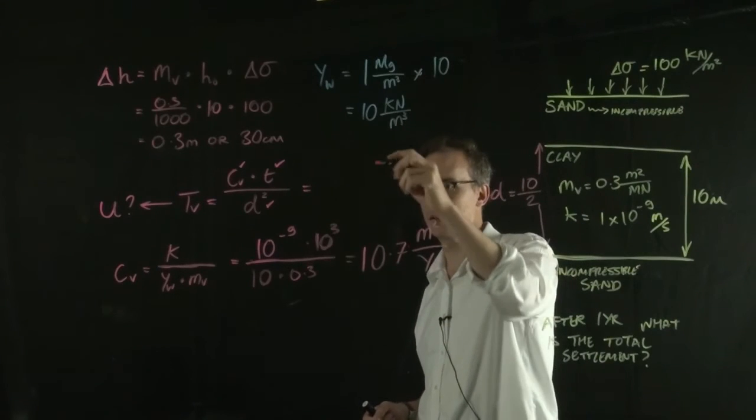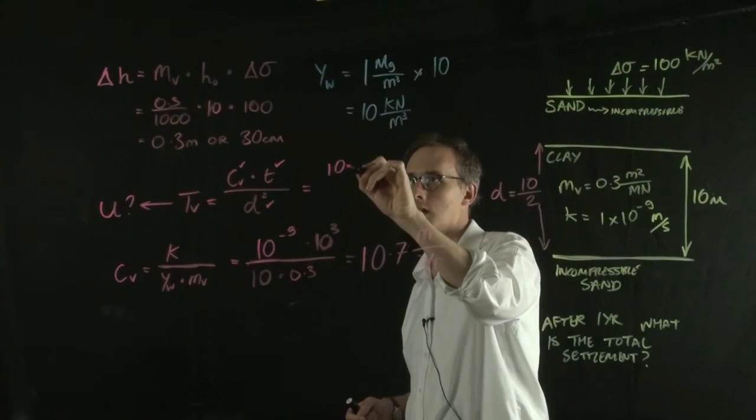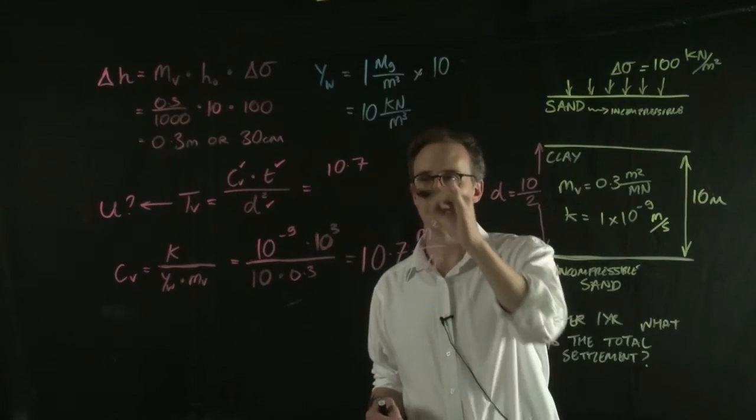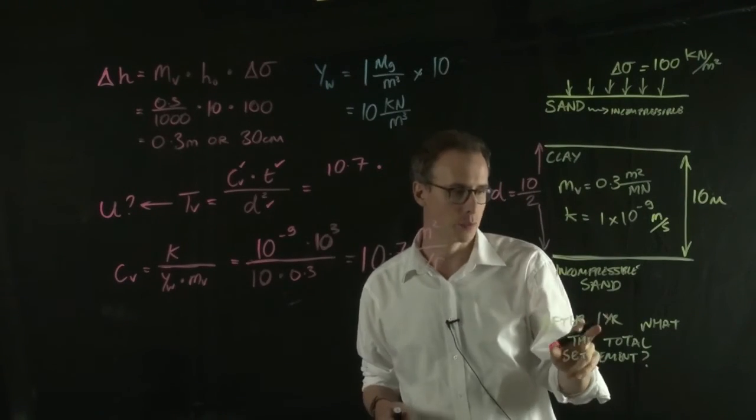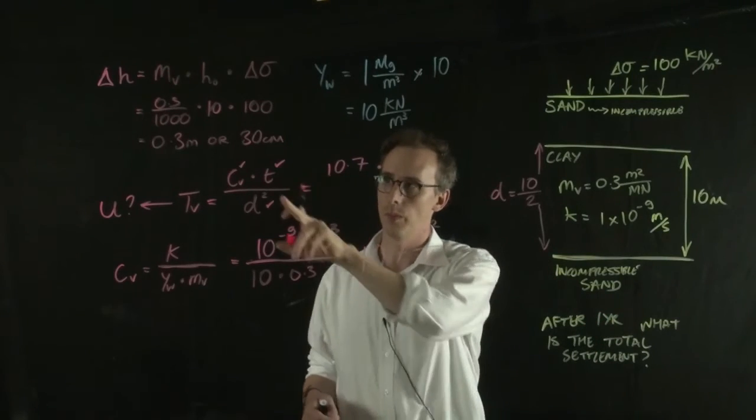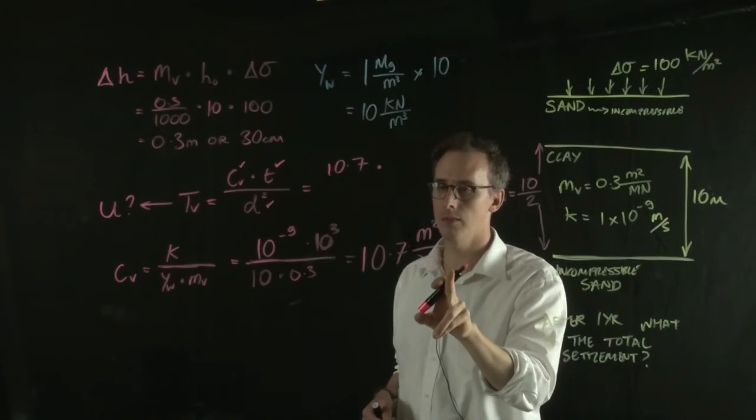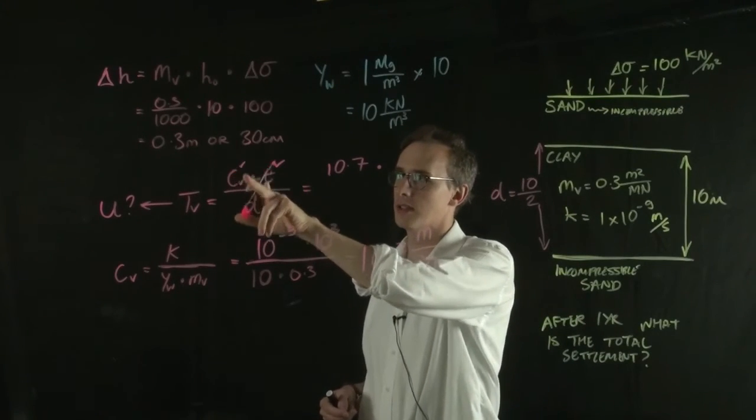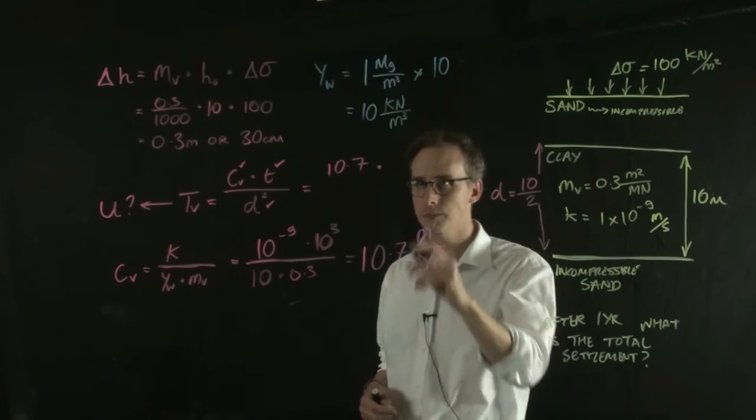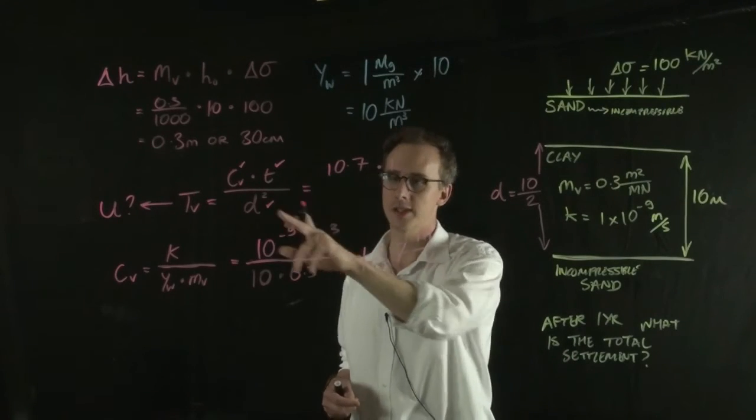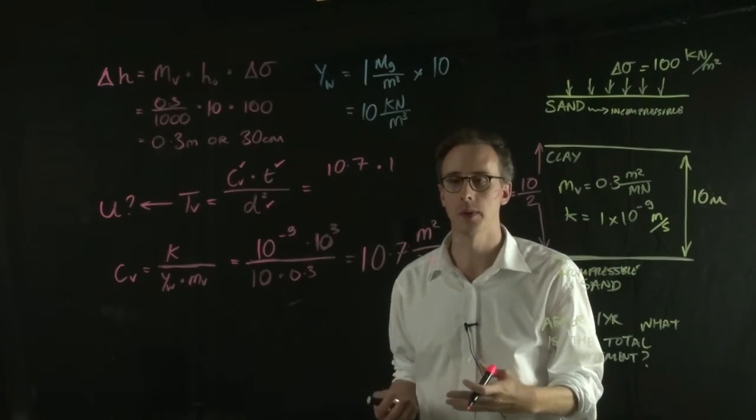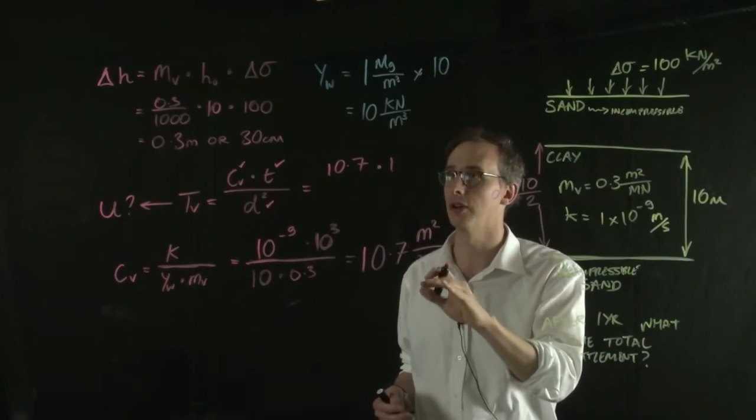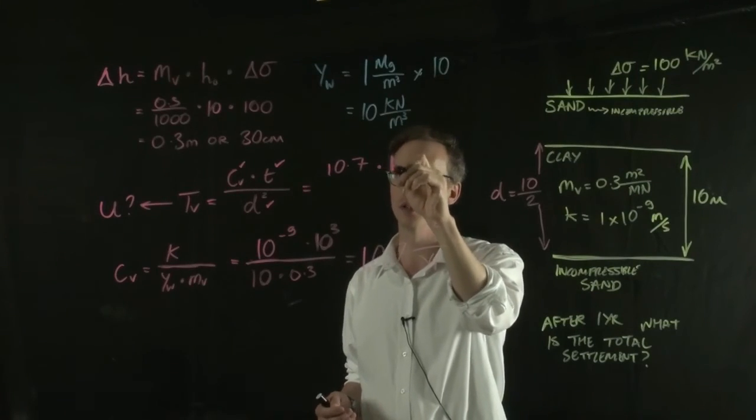Our CV value is 10.7 metres squared per year. Our T value is 1 year. So we have to be careful that our time, the T value is the same as the units of the CV value, which is per year. If the CV value was metres squared per second or centimetres squared per second or per month or something, we need to convert. But we can just put it straight in here.